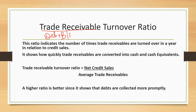This ratio indicates how many times in a year the trade receivables are turned over. It is a relation between credit sales — that means how many times in a year your trade receivables are collected, how quickly they are turned over, or how quickly they are converted into cash and cash equivalents.